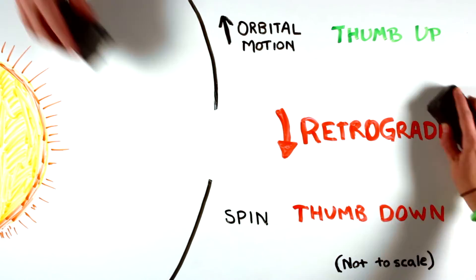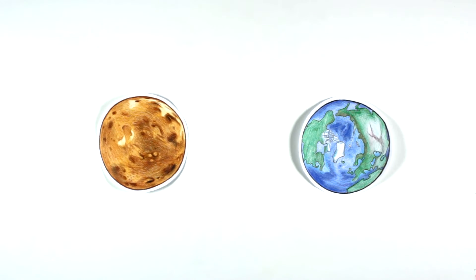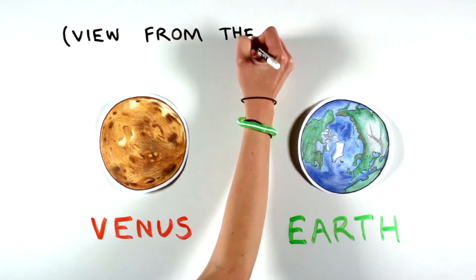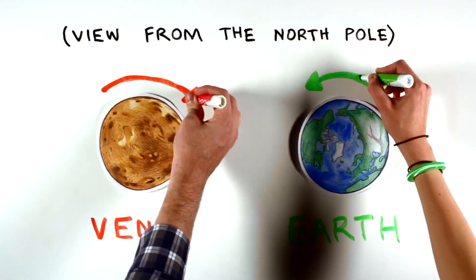Just like asteroids, planets can have either prograde or retrograde spins. Earth spins prograde. Venus spins retrograde.